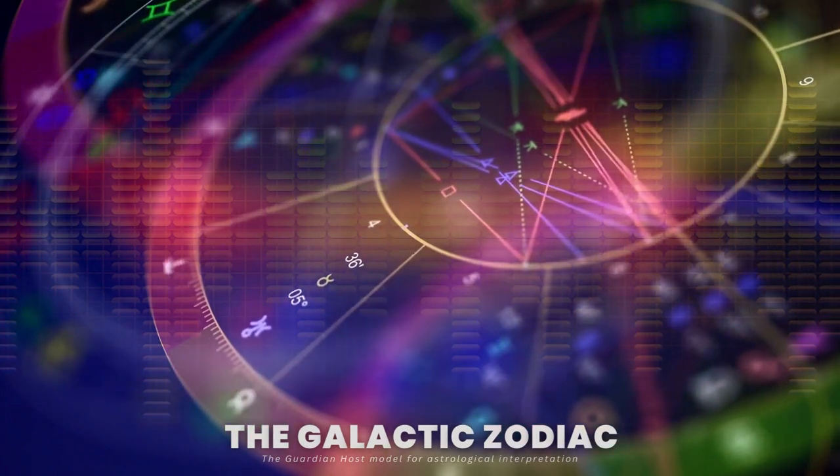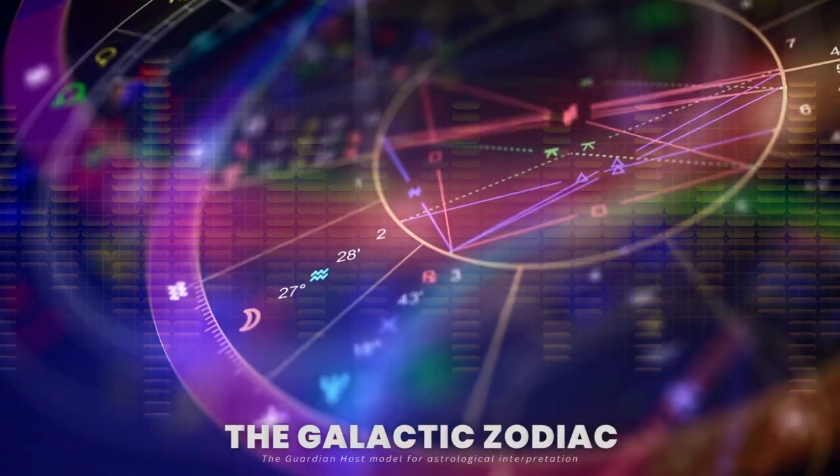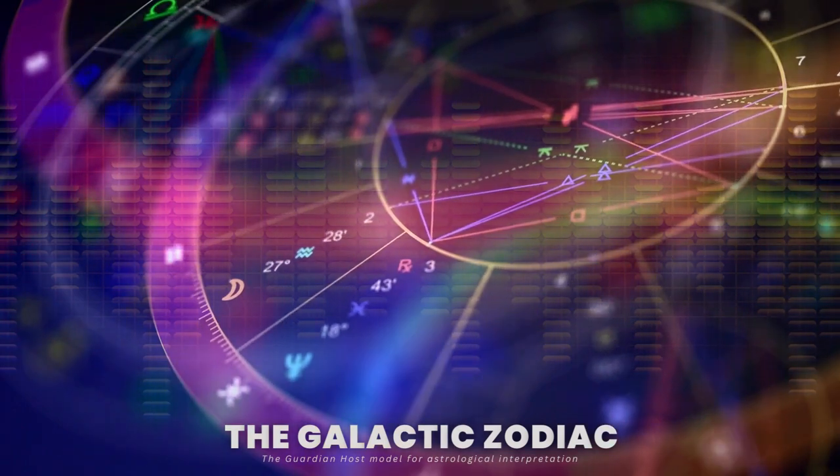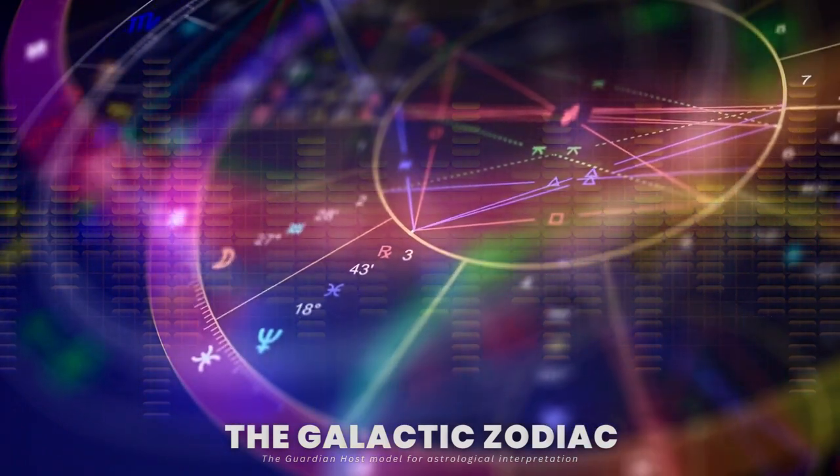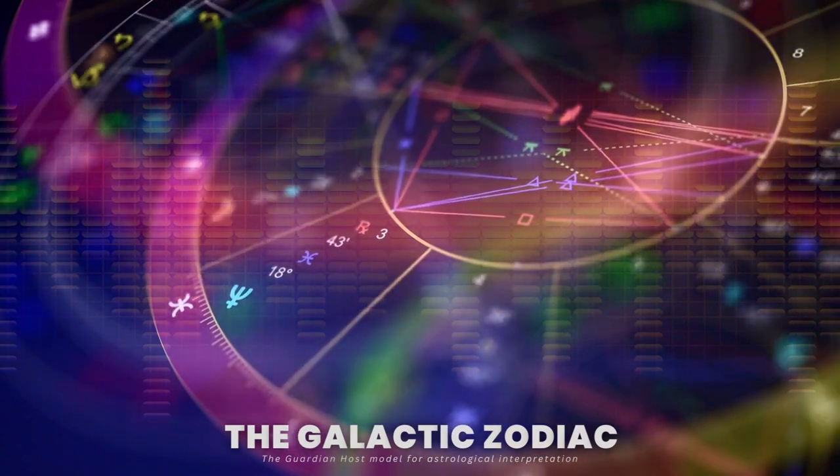Capricorn: January 19th to February 15th. Its themes are fermentation and illumination. Its element is earth.